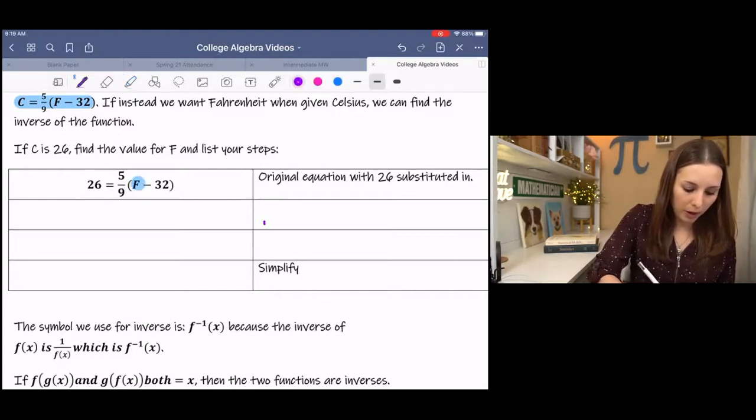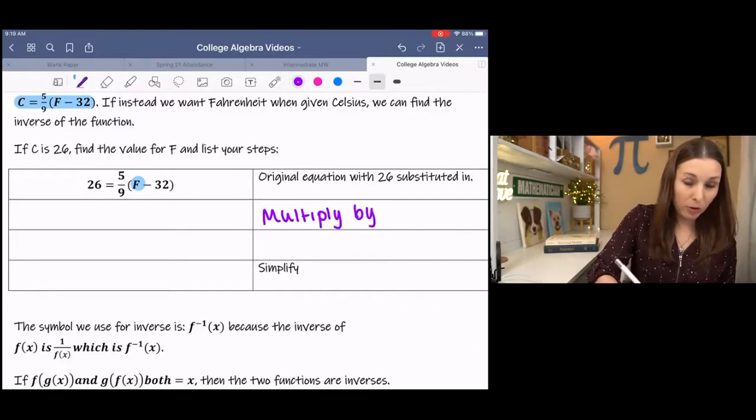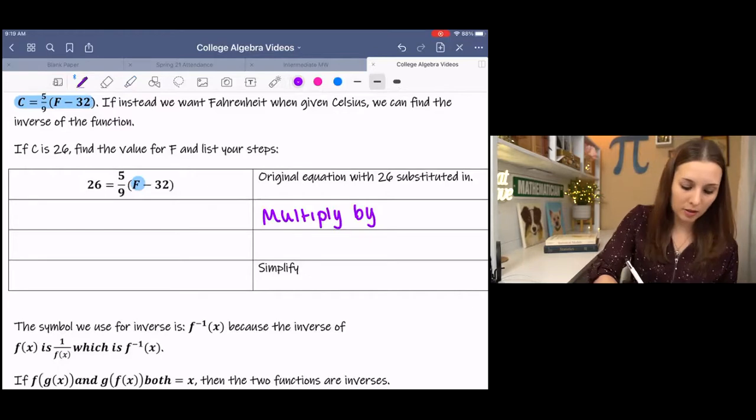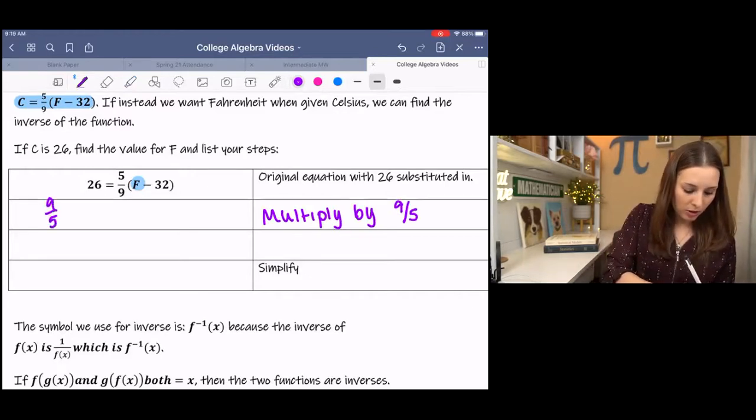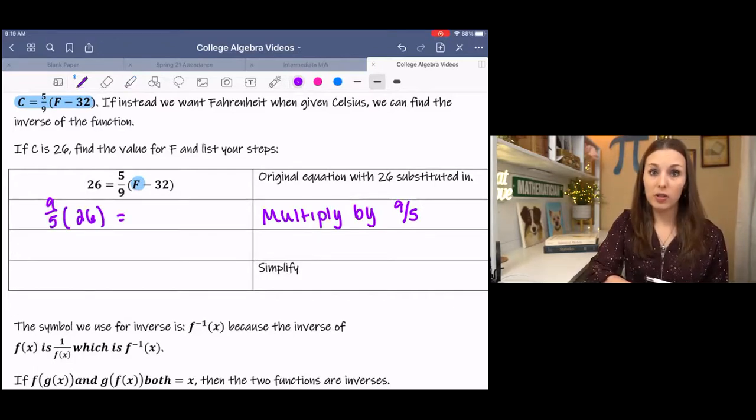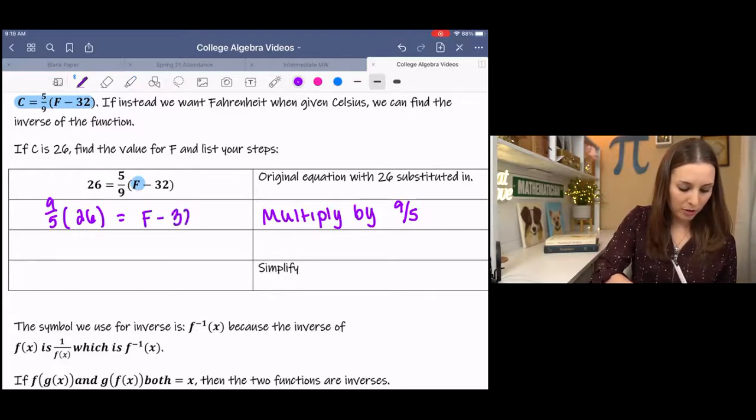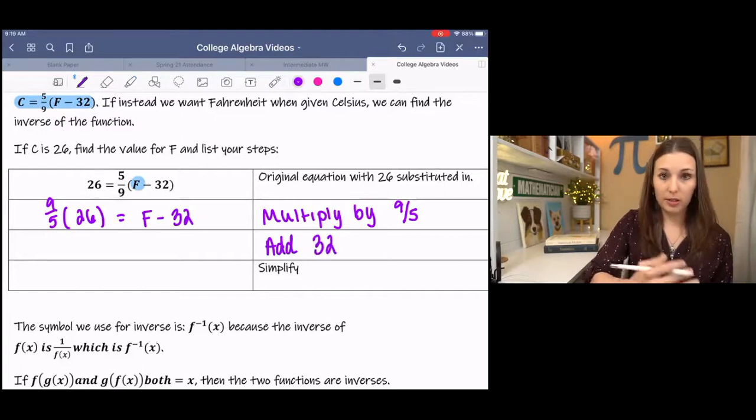And this will kind of translate into what we're learning later on in the lesson. So to isolate F, we would multiply by the reciprocal of five-ninths, which is nine-fifths, times 26. Nine-fifths times five-ninths—those are inverses. They multiply to one. So we're left with F minus 32. Then we would add 32 because it's subtracted.